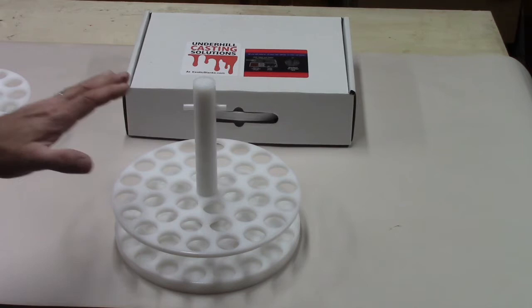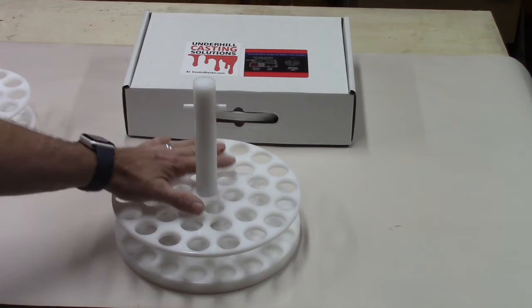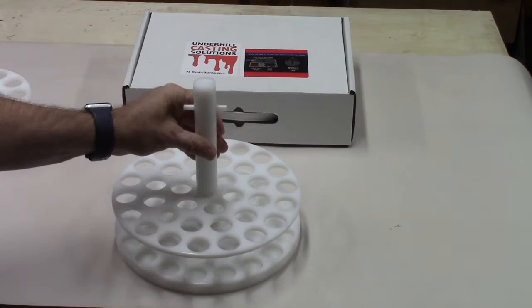The nice thing about these racks, they're being made out of Delrin, a high-density plastic that resin won't stick to. So, if you have any overpours, anything that seeps on your rack, after it dries, it will peel right off.